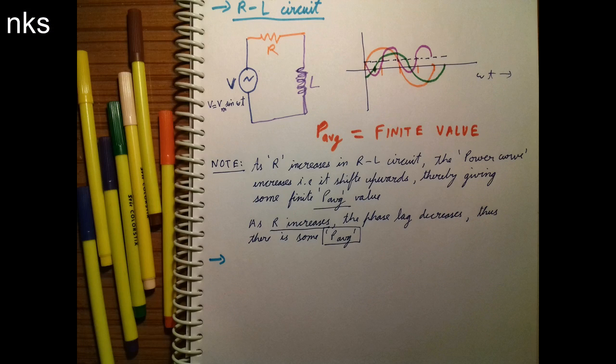So the brief summary is that when resistance is added in a purely inductive circuit, the power waveform shifts upward, thereby giving us some P average, that is the P average is a finite value.